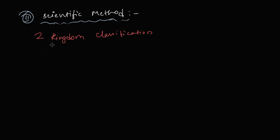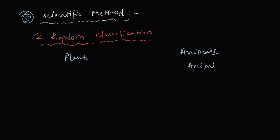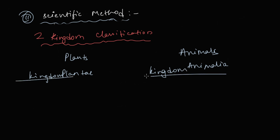Linnaeus classified organisms into two kingdoms: Kingdom Plantae and Kingdom Animalia. This two-kingdom classification was the starting point of formal kingdom-level classification in biology.